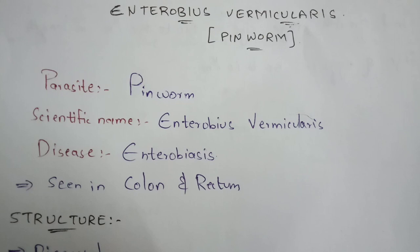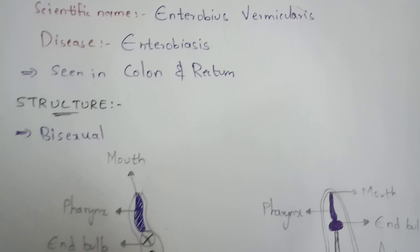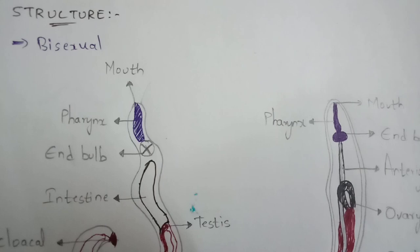Normally, this pinworm can be seen only in the parts of the colon and rectum. It is passed from the intestine but gets settled towards the colon and rectum. The colon and rectum are the end part of the large intestine, present towards the anus.